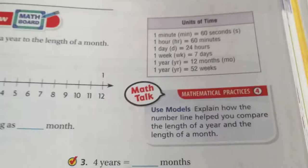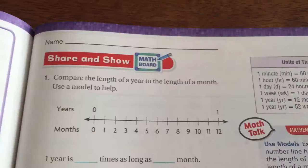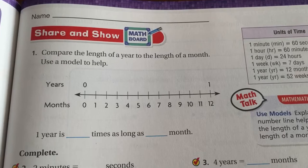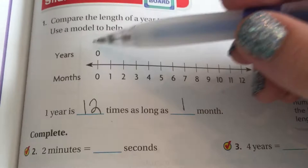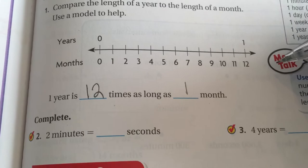Page 687. Compare the length of a year to the length of a month. One whole year is divided into 12 months, so one year is 12 times as long as one month. Think of the one year as being the whole fraction strip, and each month as being a one-twelfth size piece of that fraction.